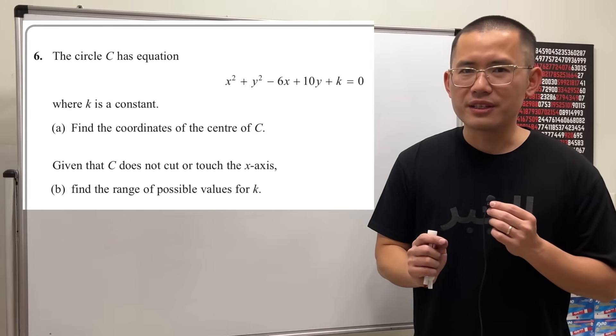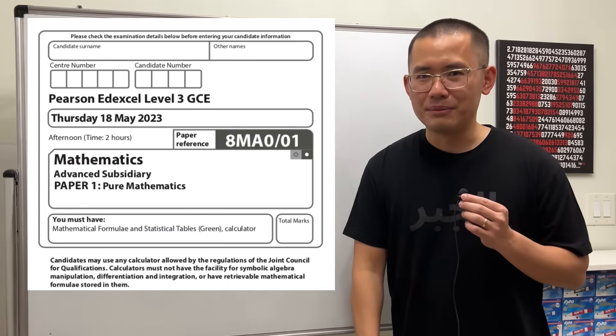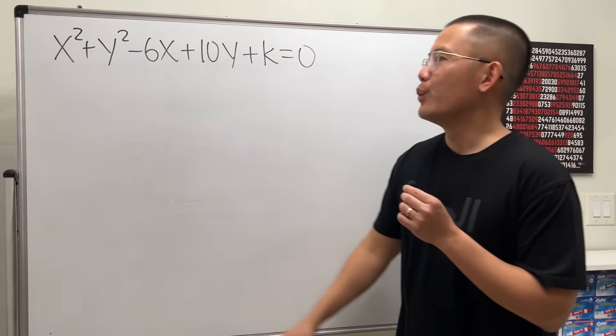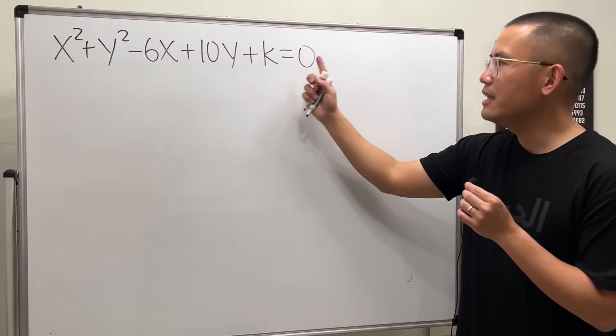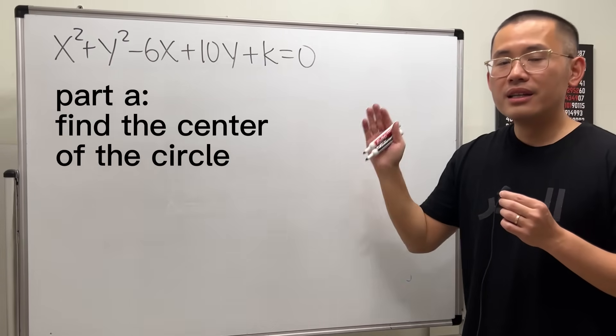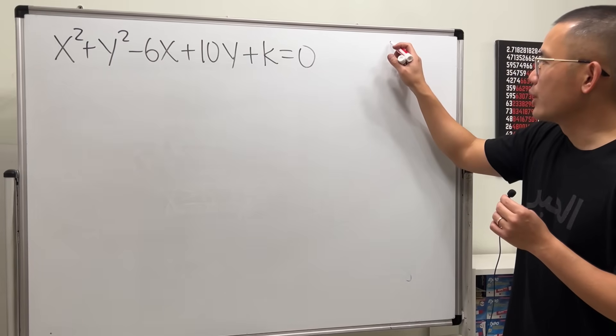My goal for this video is to help you understand how to solve this circle question from the 2023 A-level math test. Let's have a look. We have x squared plus y squared minus 6x plus 10y plus k is equal to 0. This actually represents a circle because let me give you guys a quick review.